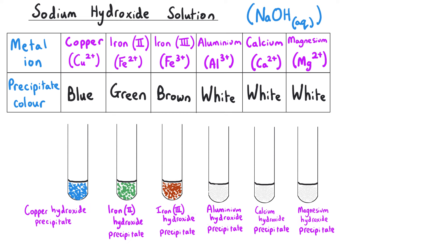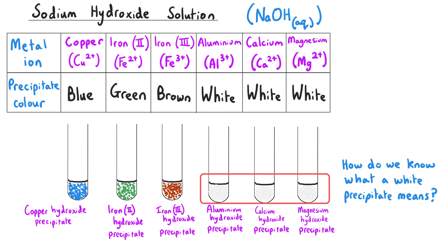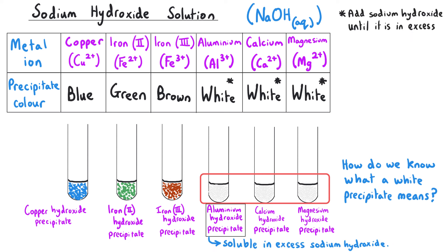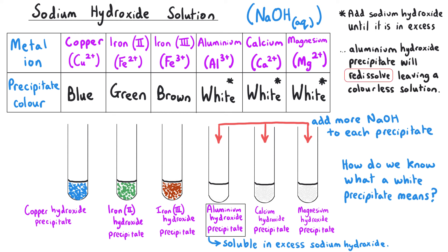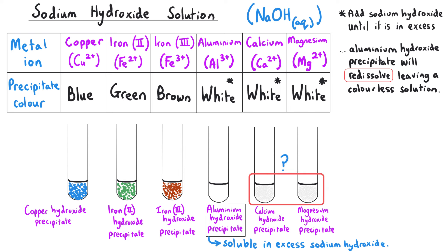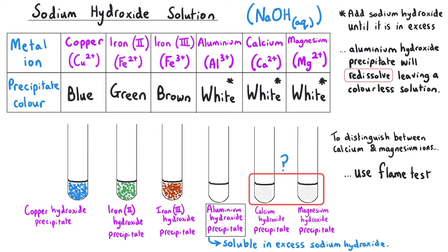It might seem far from ideal that three precipitates all have the same white colour, but we can distinguish between them by doing further testing. The aluminium hydroxide precipitate is soluble in excess sodium hydroxide solution — so if three test tubes all contain a white precipitate, we keep adding sodium hydroxide, and the one where the precipitate dissolves is the one containing aluminium hydroxide, meaning the original sample contained aluminium 3+ ions. Unfortunately, neither calcium hydroxide nor magnesium hydroxide are soluble in excess sodium hydroxide, so to distinguish between calcium and magnesium ions we need to do a flame test.